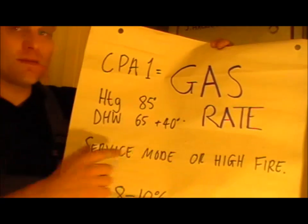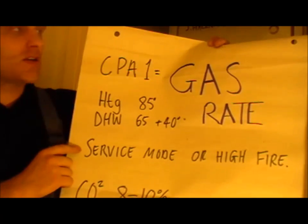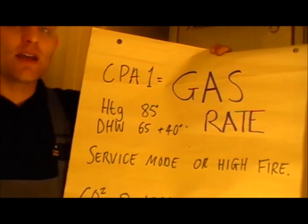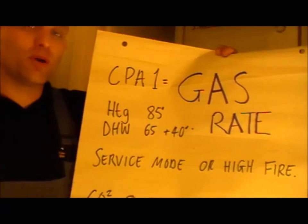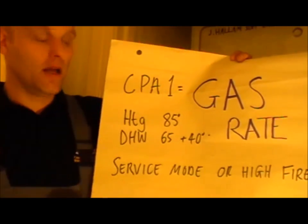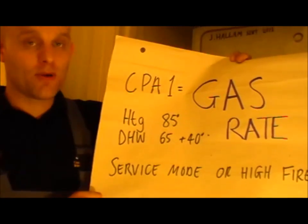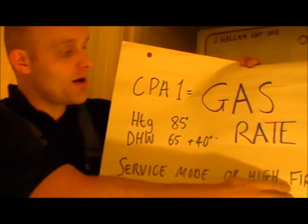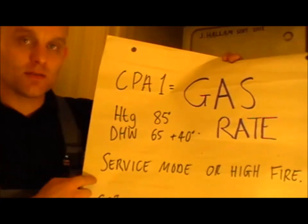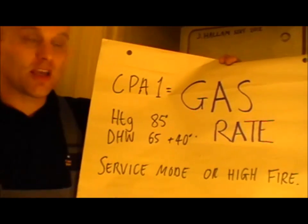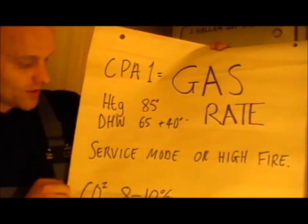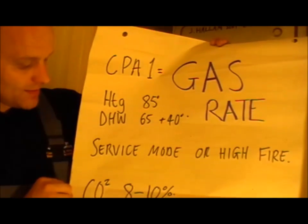When you do a gas rate, always put it on high fire — so bring it into hot water mode so the burner is working its hardest and burning the most gas possible, so you get a proper reading. If you can't put it in high fire, maybe there's a service mode button where you have to press two buttons at once, for example.